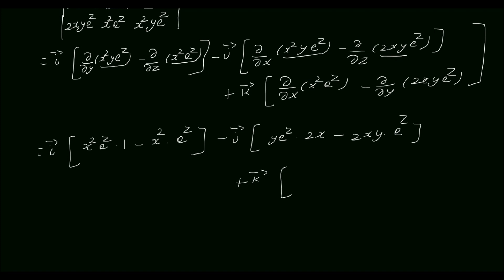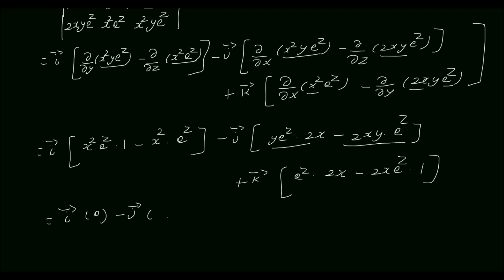Plus k vector: differentiating with respect to x, e power z is a constant, so the differential of x squared is 2x. Then differentiating with respect to x, 2x e power z is a constant, and the differential of y is 1. So the i vector term gives x squared e power z minus x squared e power z, which is 0. Minus j vector gives 2xy e power z minus 2xy e power z, which is 0. Plus k vector gives 2xy e power z minus 2xy e power z, which is 0.